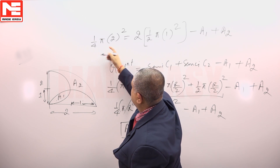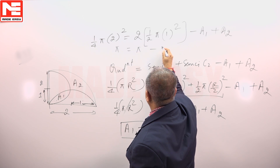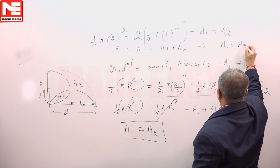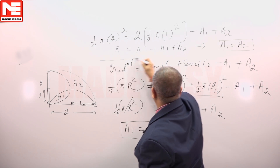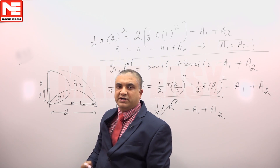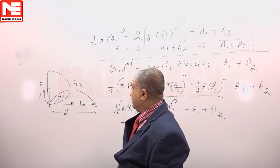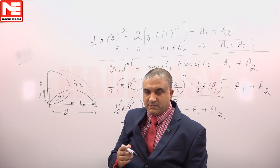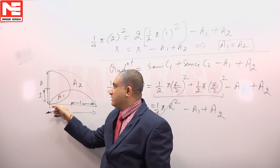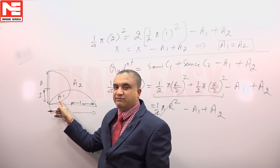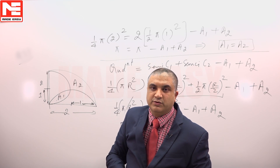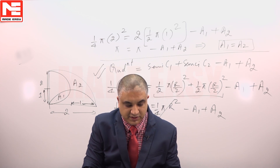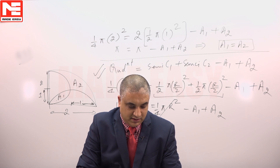This comes out to π = π − a1 + a2, confirming a1 = a2, irrespective of the radius. No matter how we solve it, a1 will always equal a2. The key observation is that the quadrant is made up of 2 semicircles minus the common area a1, plus the area not included a2. From this basic equation we get the ratio a1:a2 = 1.